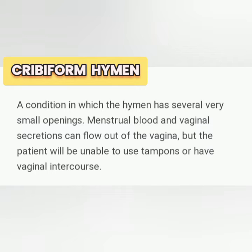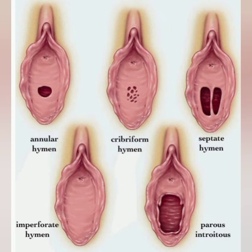Coming to the cribriform hymen: it is a condition in which the hymen has several very small openings. Menstrual blood and vaginal secretions can flow out of the vagina, but the patient will be unable to use tampons or have vaginal intercourse. These are all the different hymen types.